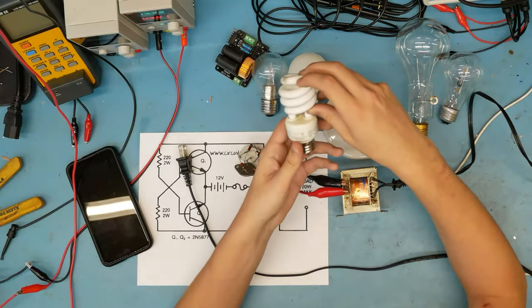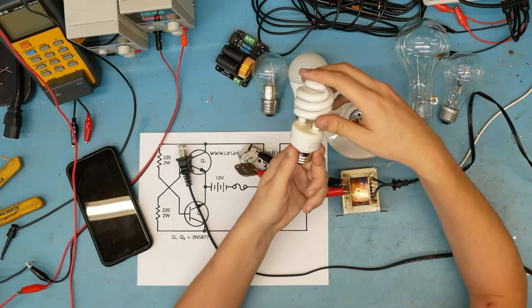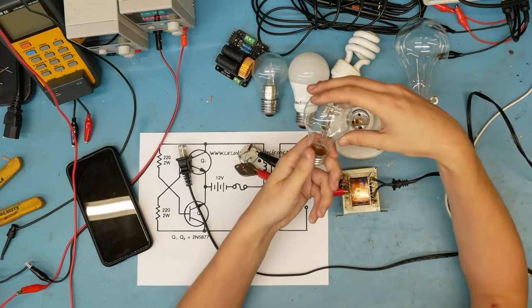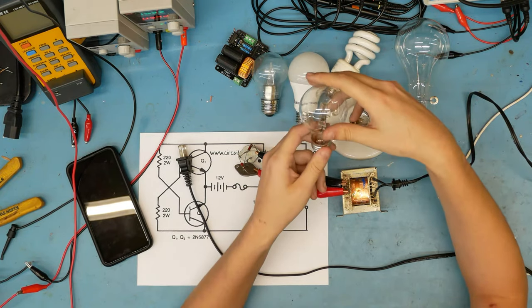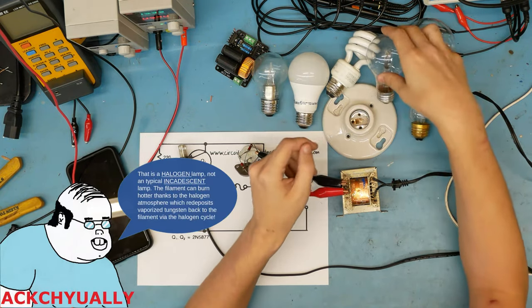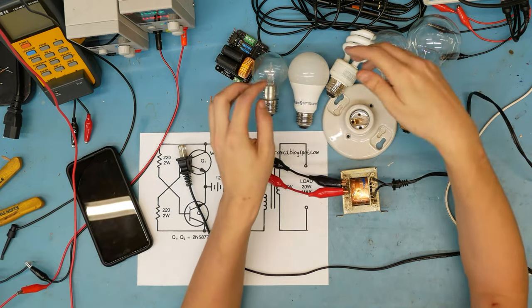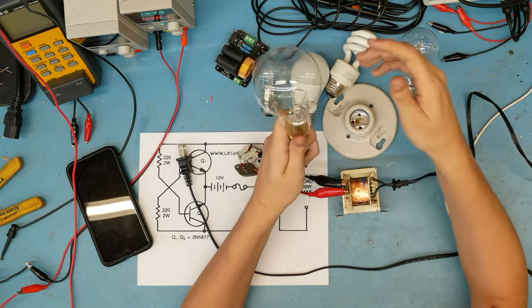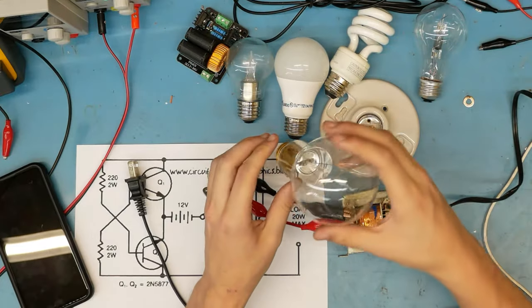Then we have what I imagine is a 15 watt CFL. No, 14 watts. And then we have a 45 watt incandescent resistive load. Whereas these are going to be probably a capacitive dropper or some sort of electronic inverter.